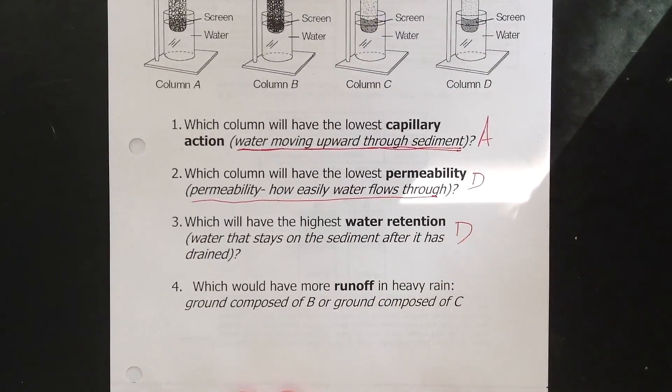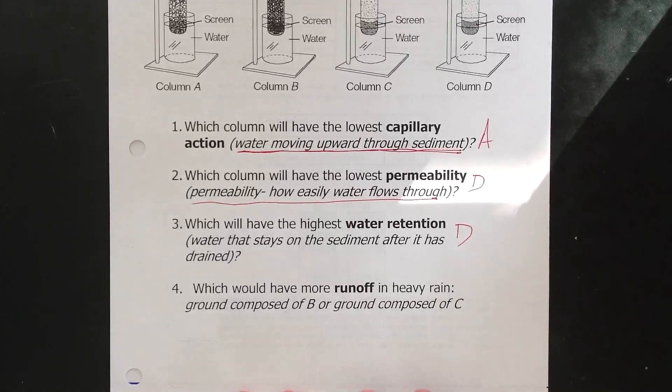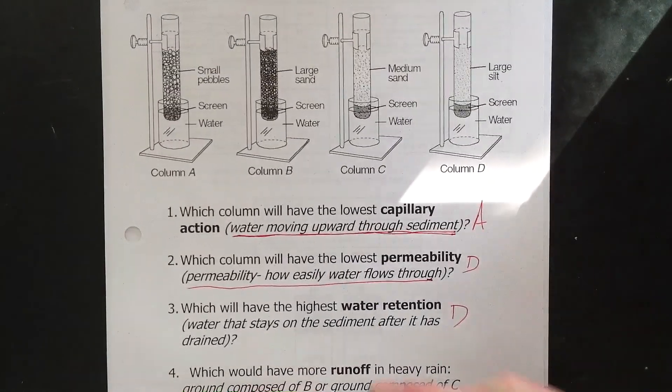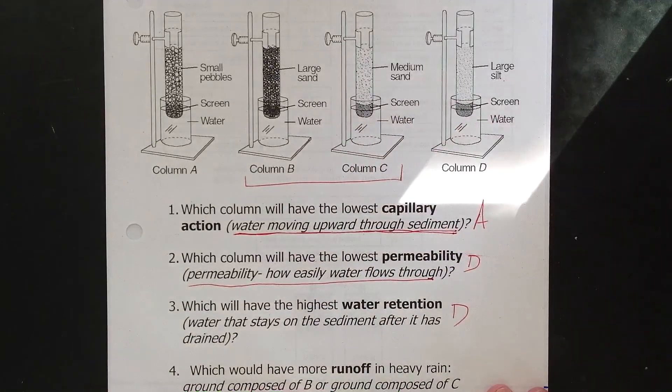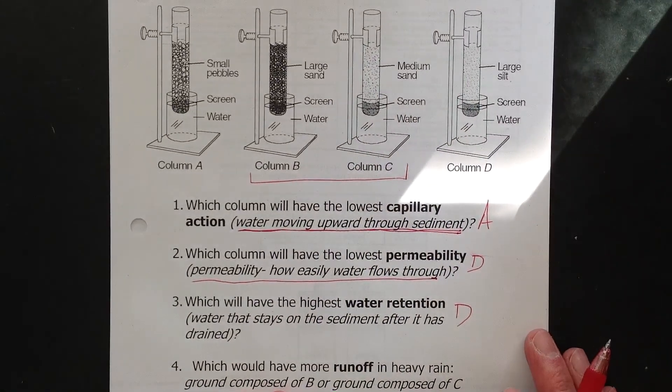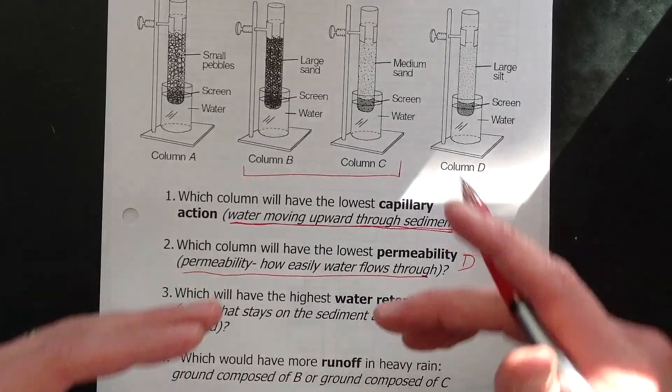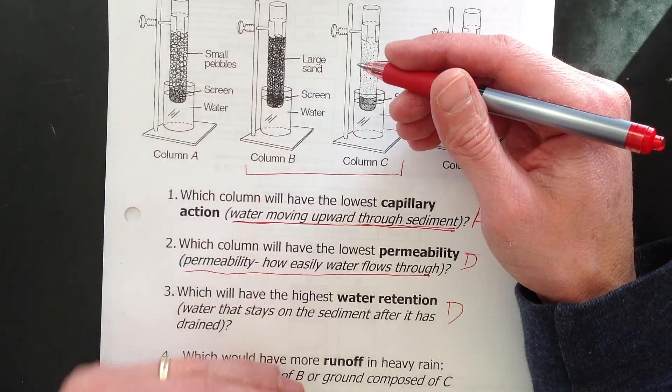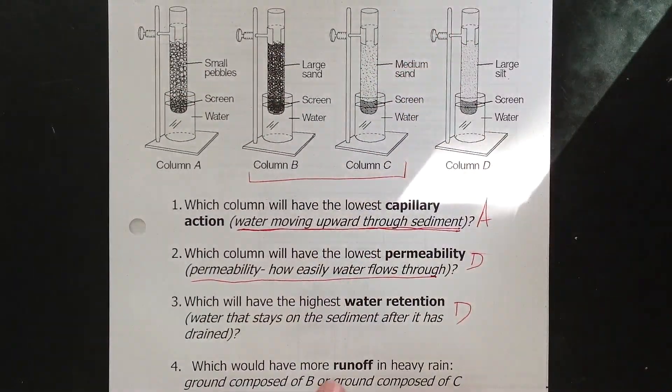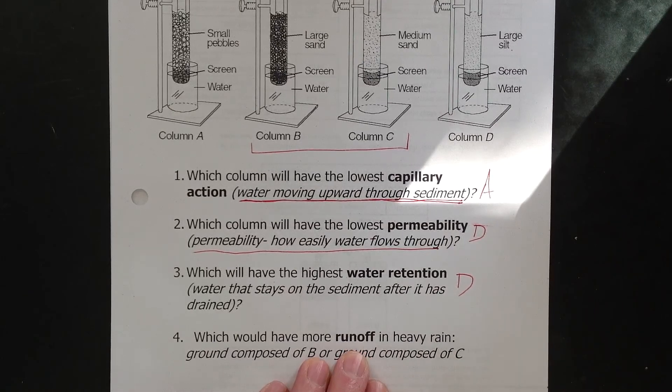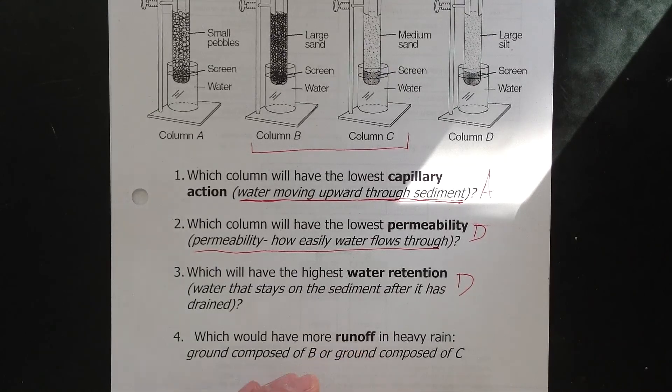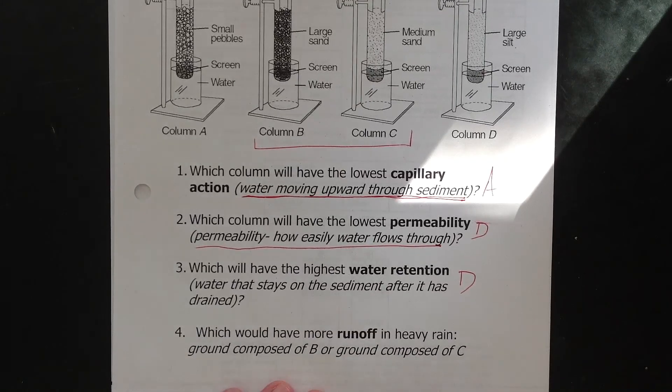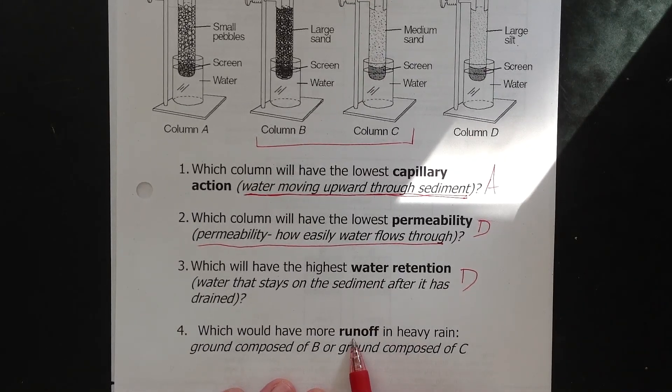And then four. Which ground would have more runoff in heavy rain? Ground composed of B. Ground composed of C. Now I'm proposing this. It's more runoff. So rain hits the ground. And it can do one of two things. It can do runoff, which is stay on the surface, flow downhill. Or it will infiltrate, go into the ground. Okay. So to have the more runoff, basically the less infiltration you have, the more runoff you'll have. So to have more runoff, you need water to go into the ground slowly, more difficult to go into the ground. And therefore, I'm looking for the smaller sediment.